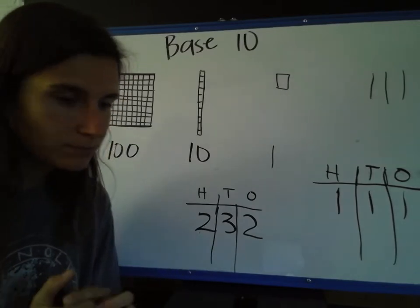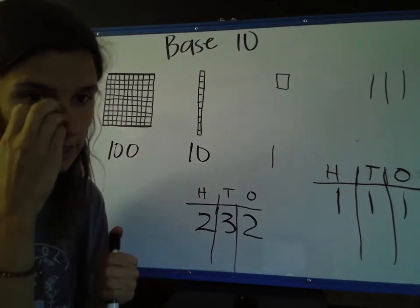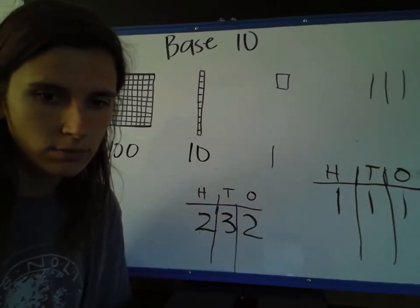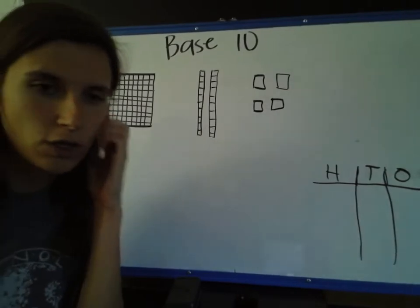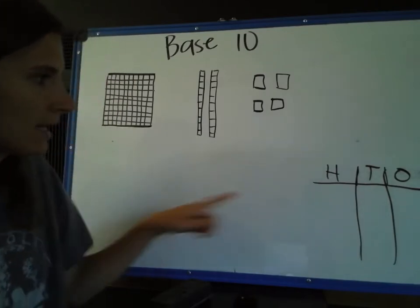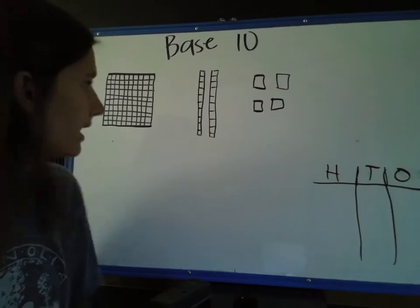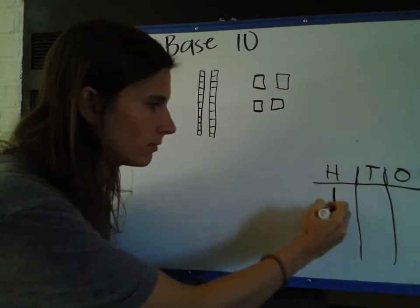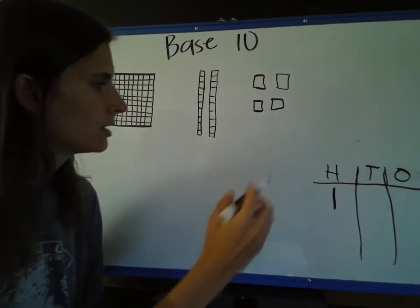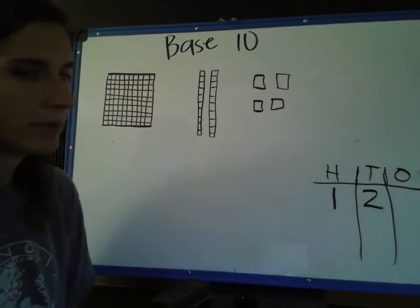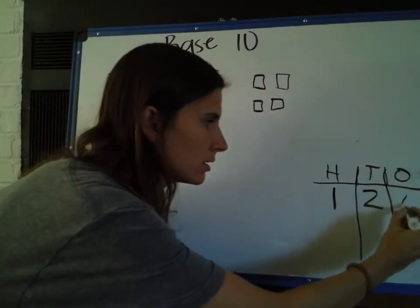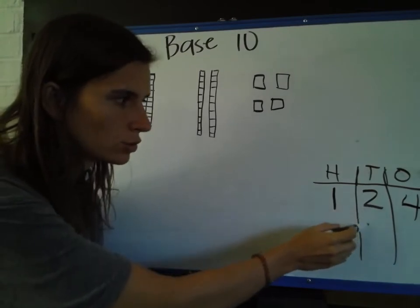We'll keep practicing with that as we keep going along. So we're going to practice finding a number, and then using our hundreds, tens, and ones chart to figure out what the number is. So I'm going to practice showing you how to use the HTO, or hundreds, tens, and ones chart to figure out what number we have. I'm going to figure out how many 100s we have — and I see that we only have one, so I'm going to put a one right here. Then I'm going to move on to my tens, and I'm going to figure out how many tens I have, which is one, two. And then I'm going to look at how many ones I have — one, two, three, four. So I have four ones. So my number is 124.